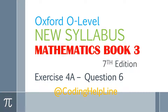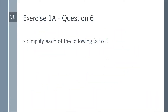Hello guys, welcome to my channel. In this video I am going to solve question 6 of exercise 4a from book 3 of Mathematics for the O Level. Let's begin. We have question 6: simplify each of the following, and it has six parts.